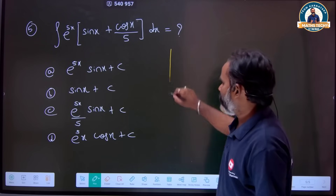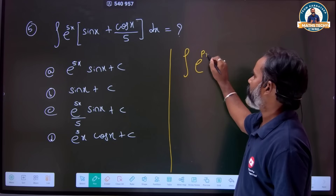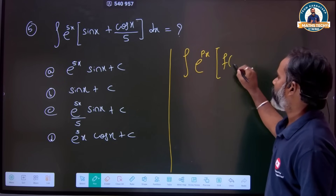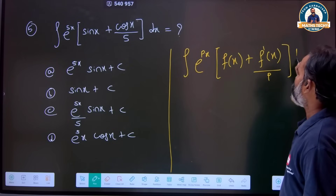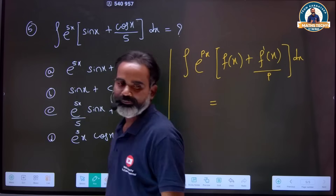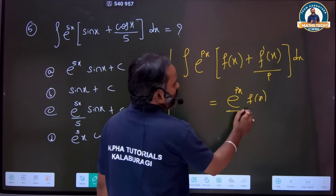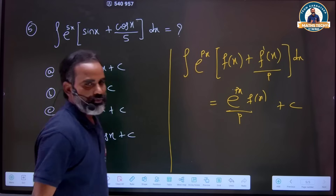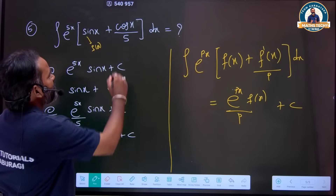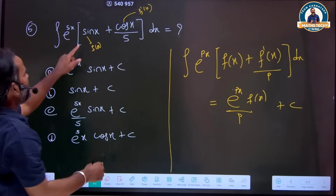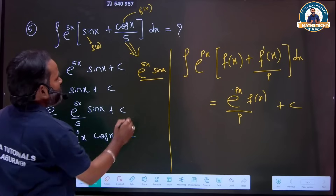Now a very interesting and simple integration example: suppose integration of e to the power of px. If the function has a differentiation in the denominator — the x-coefficient — this value will always be equal to e to the power of px times f of x.